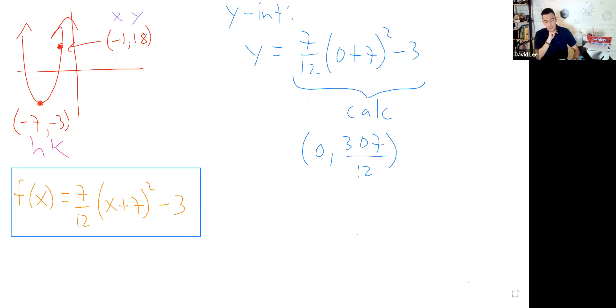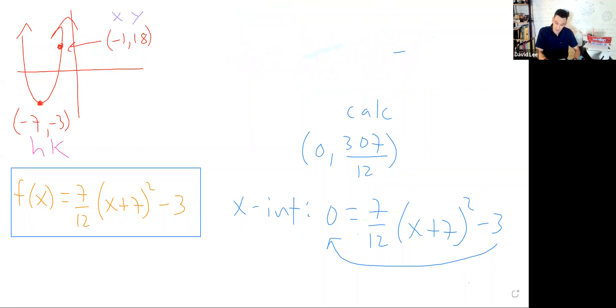Now for the x-intercept, we're going to put 0 in for y. We'll write the equation again, but put 0 instead of f(x). So that's 0 = (7/12)(x + 7)² - 3. Now I'll move the negative 3 to the other side. Let me erase my previous work with the y-intercept. So we would get 3 = (7/12)(x + 7)².